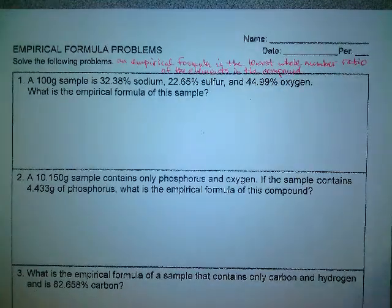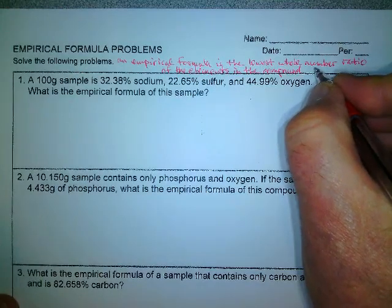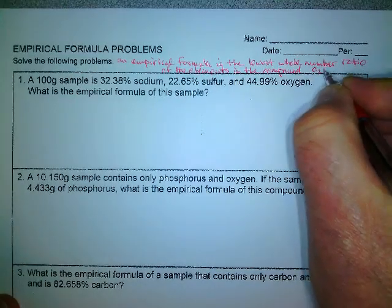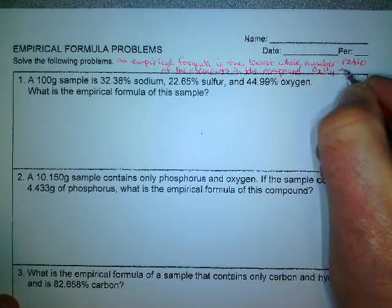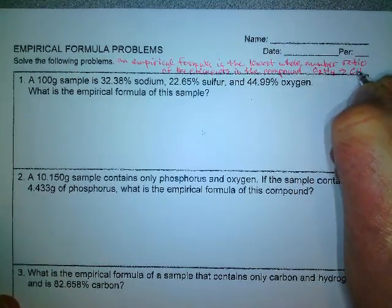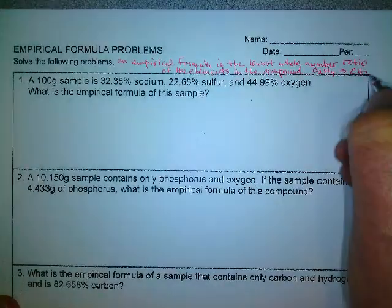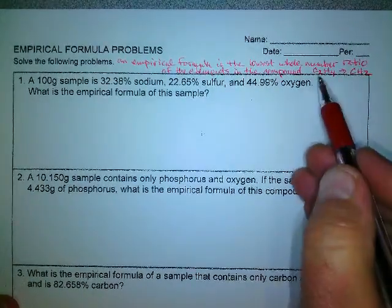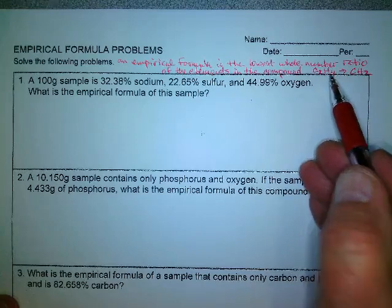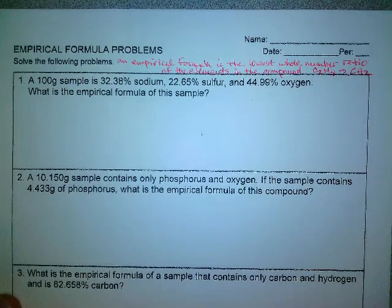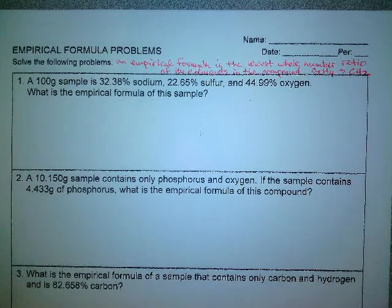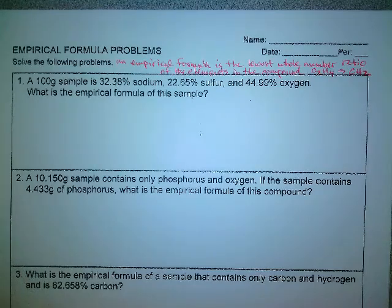So, for example, let's suppose that our actual formula was C2H4. The empirical would be CH2. Two to four, one half. One to two, one half. It's the lowest whole number ratio of the elements in that compound. That's an empirical formula.